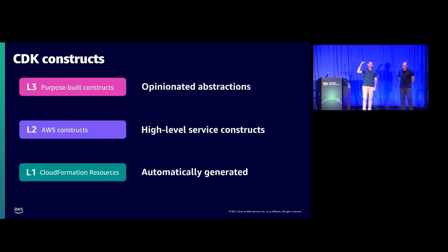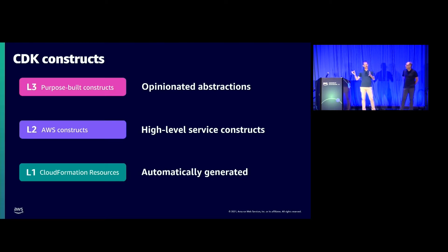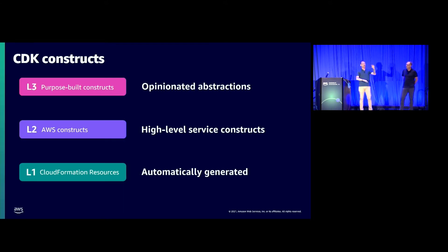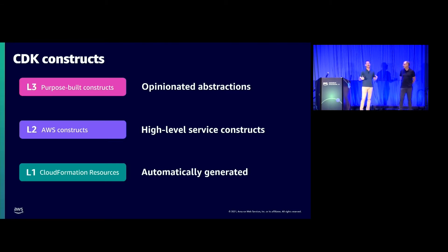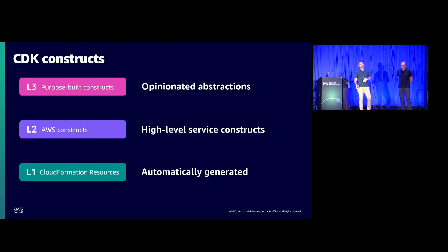There are three levels of constructs with CDK: L1, L2, and L3. L1 constructs are automatically generated based on CloudFormation resources — anything supported in CloudFormation is supported here. L2 are higher-level constructs that are service-specific, like an S3 bucket or access point. L3 is the composition of those services into something you want — this is where Blackboard has built L3 constructs, and there are plenty available on constructs.dev. Think of it as: I want a REST API, a Lambda that writes to DynamoDB — it's an abstracted composition with sane and safe defaults, opinionated intentionally, and built from well-architected best practices.